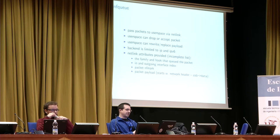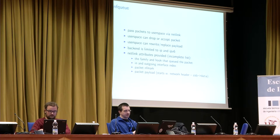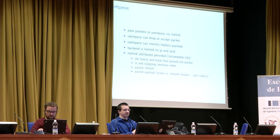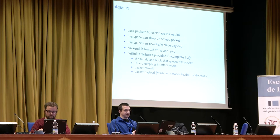There are two major features missing from nftables for the nftables bridge family. One is NFQ. NFQ means you can pass a packet to userspace via a netlink socket, and then userspace can drop or accept the packet asynchronously. It can also rewrite or replace packet payload. NFQ itself is family-agnostic, but there is a backend connected to it that is currently limited to IP or IPv6, because the backend has to do things like check if userspace changed the IP address and then do rerouting. From a userspace point of view you get a netlink message with attributes such as the family, the hook that secured the packet, input and output interface indexes, the packet nfmark, and of course the packet payload, which always starts from the network header.